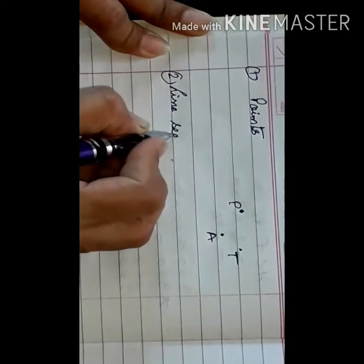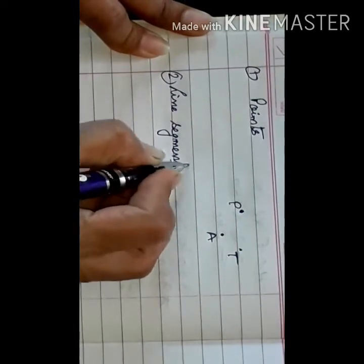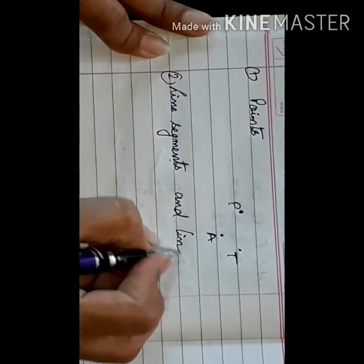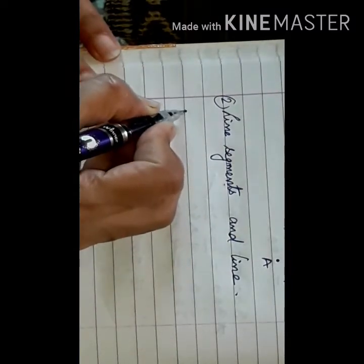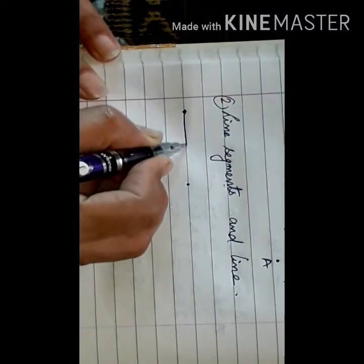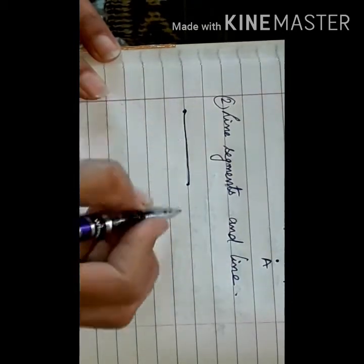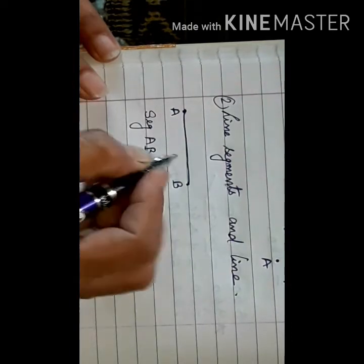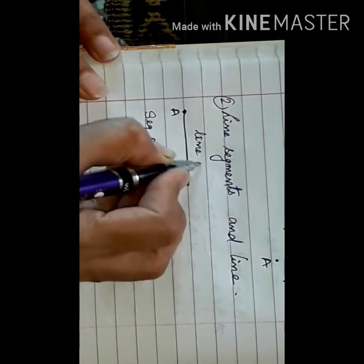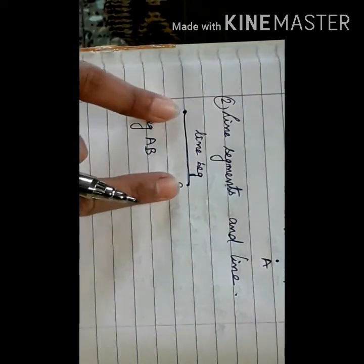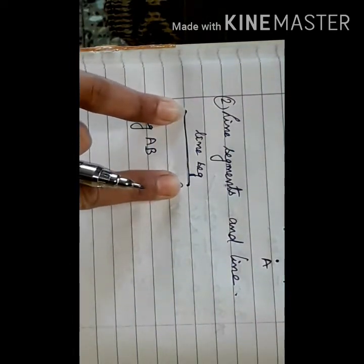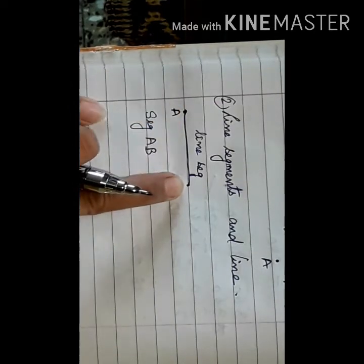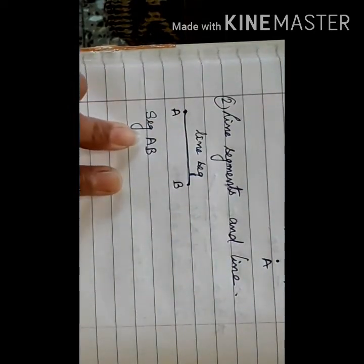Now what are line segments and lines? Line segments are segments drawn from a specific point to a specific point. Suppose A and B — segment AB is a line segment. When we have two specific points where it starts and where it ends, that line is known as a segment.